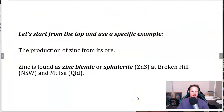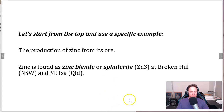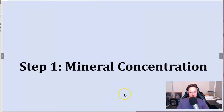Starting from the top and using specific examples, we'll go through all these steps. There are two common examples: the extraction of zinc and the extraction of aluminium. First, the production of zinc from its ore — it's found as zinc blende or sphalerite, which is ZnS, at Broken Hill in New South Wales or at Mount Isa in Queensland, and is exported to different parts of Australia.